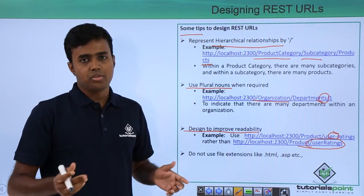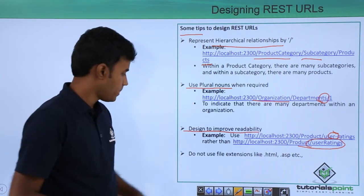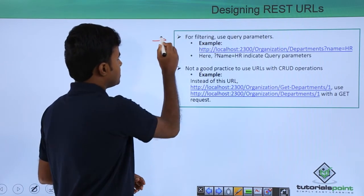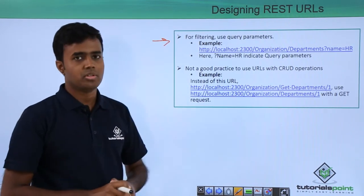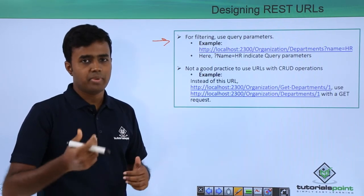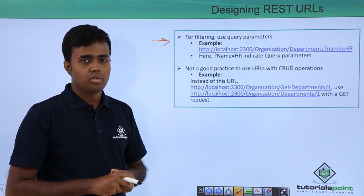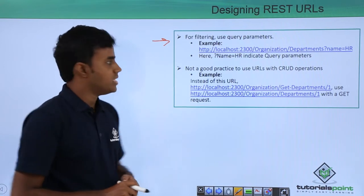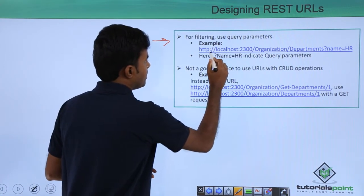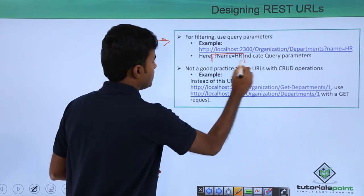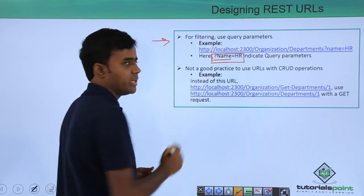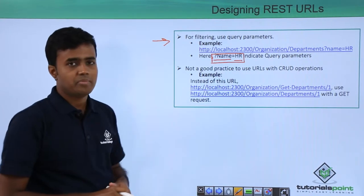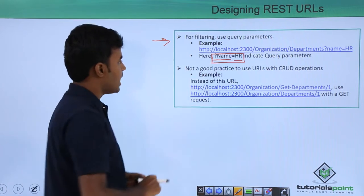The next tip is: for filtering, always use query parameters. For example, if you want to filter certain departments within an organization, use a question mark followed by the parameter name and its value separated by an equals sign.